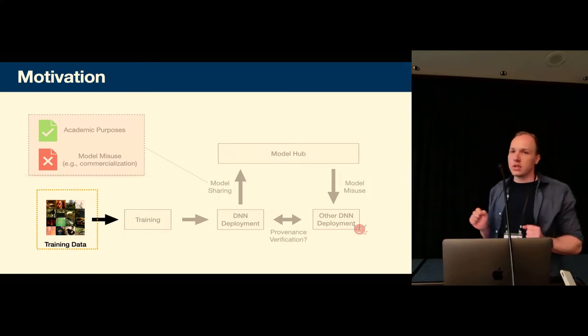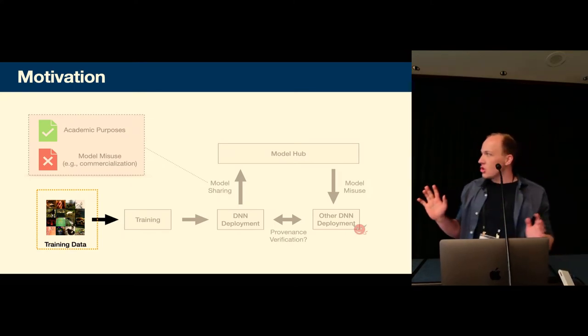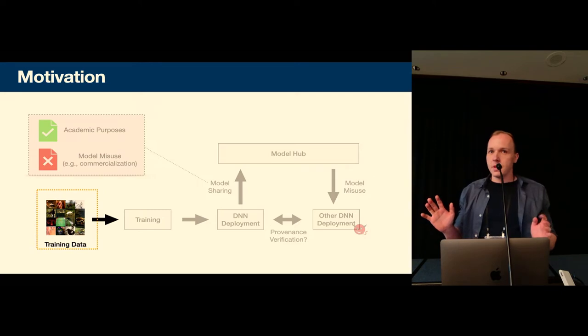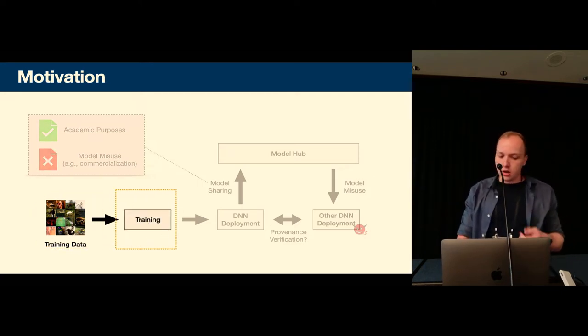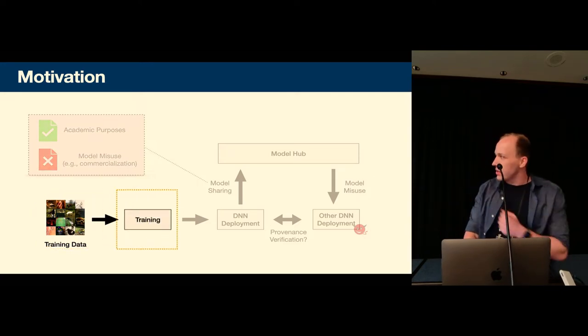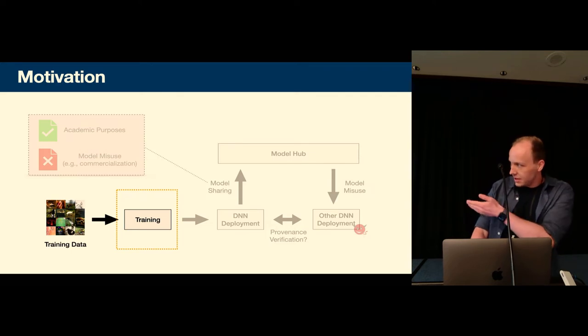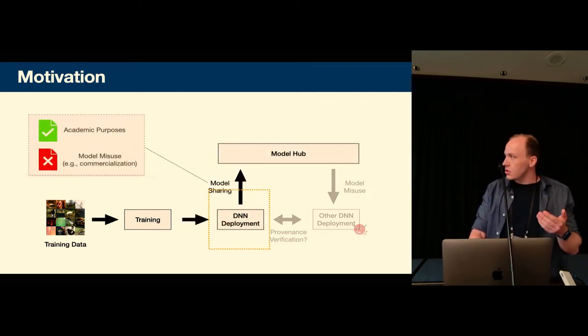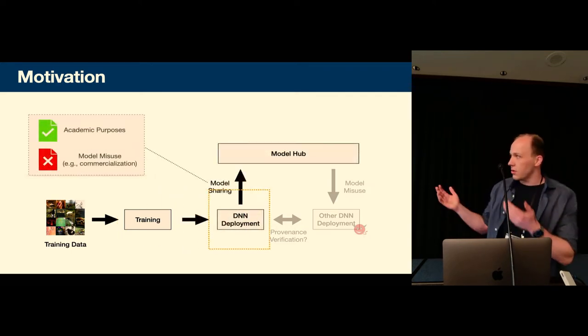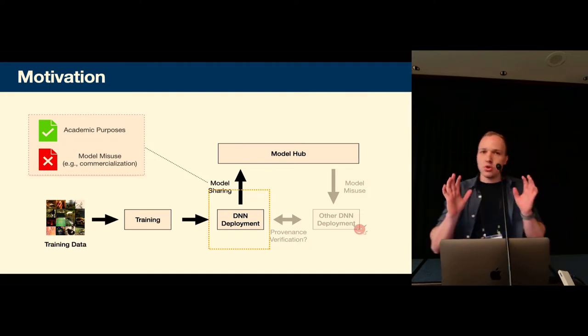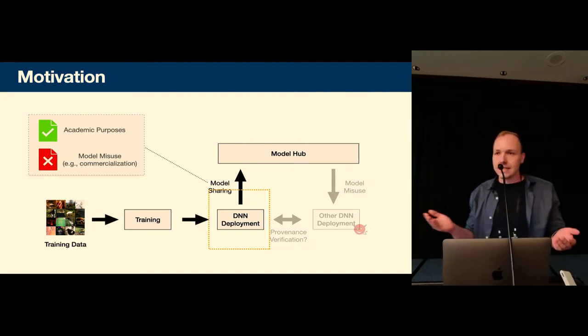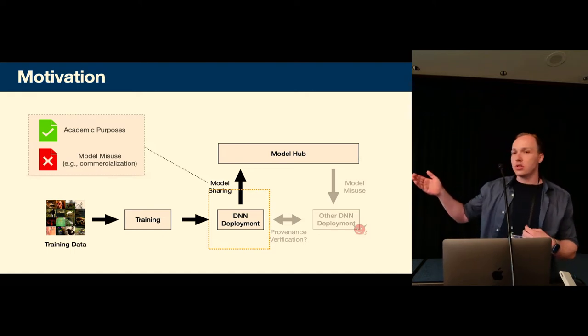So what is deep neural network watermarking? Imagine you're a company and you have training data and you want to train a model on this training data. This is a process that outputs a model and then you want to share this model publicly. So you want to upload it for example on Model Hub. Now you don't want to upload it just as it is but you want to upload it with a usage agreement.